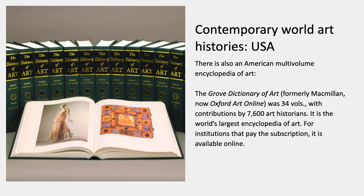In the United States, there is the Grove Dictionary of Art, which used to be called the Macmillan Dictionary of Art, then the Grove Dictionary, and now the Oxford Grove Dictionary. Usually you would consult it online if your institution pays the subscription. This is a significant issue: a number of places in the world can't afford these online subscriptions. At the School of the Art Institute, we have a subscription. If we couldn't afford that, we'd have just the printed edition, and if we couldn't afford that, you wouldn't have either one — which is quite common.